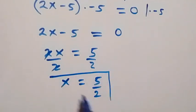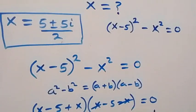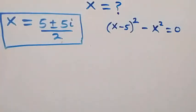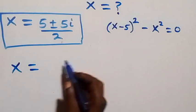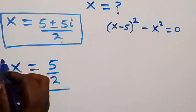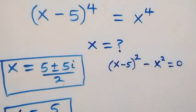Dividing through, we have 2x minus 5 equals 0, so 2x equals 5, and dividing both sides by 2 gives x equals 5 over 2. So we have a real solution of 5 over 2. Altogether, we have three solutions: two complex solutions and one real solution, which is 5 over 2. Thank you for watching!